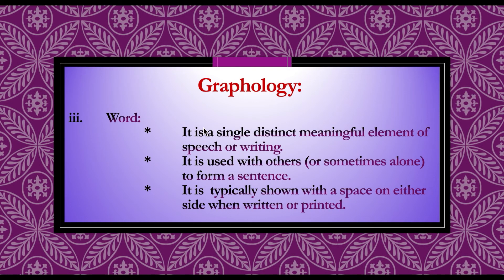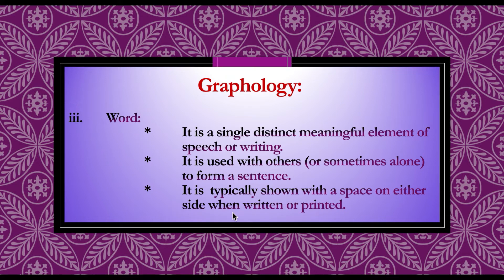Point number three: the third rank scale of graphology is word. A word is a single distinct meaningful element of speech and writing. It is used with others, or sometimes alone, to form a sentence. In the writing system, a word is typically shown with a space on either side when written or printed.